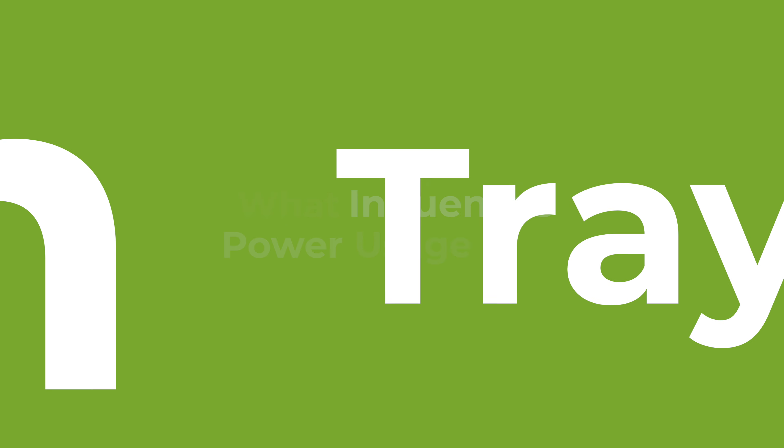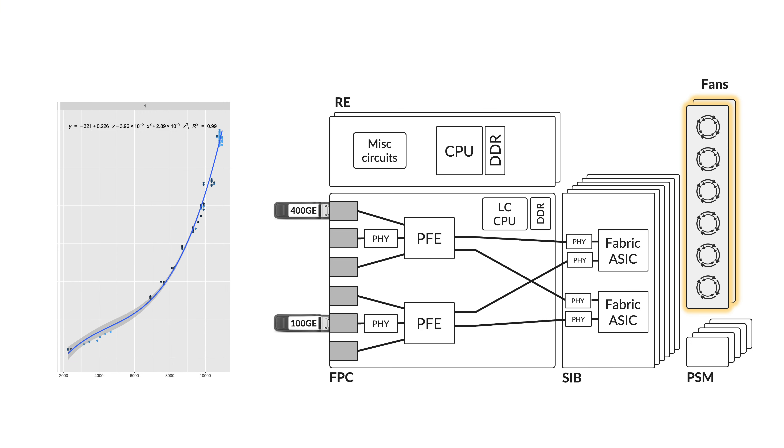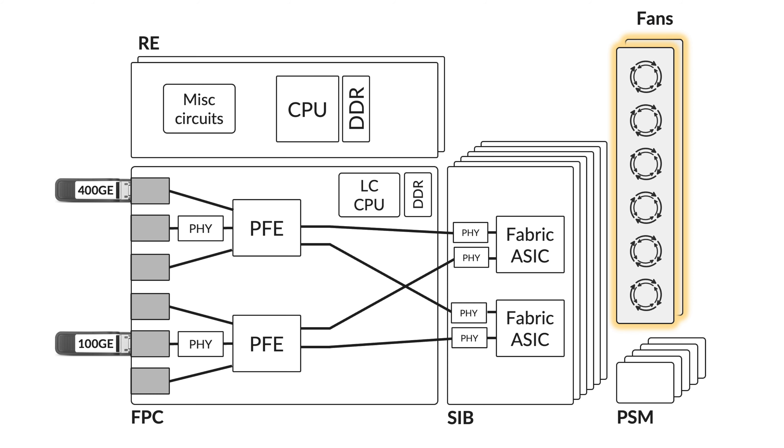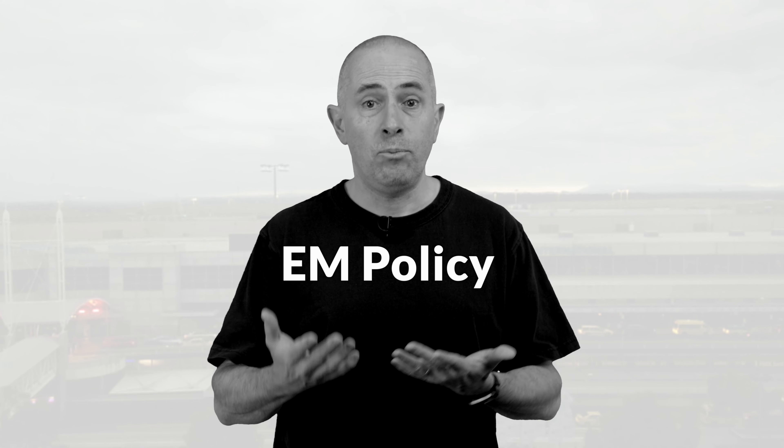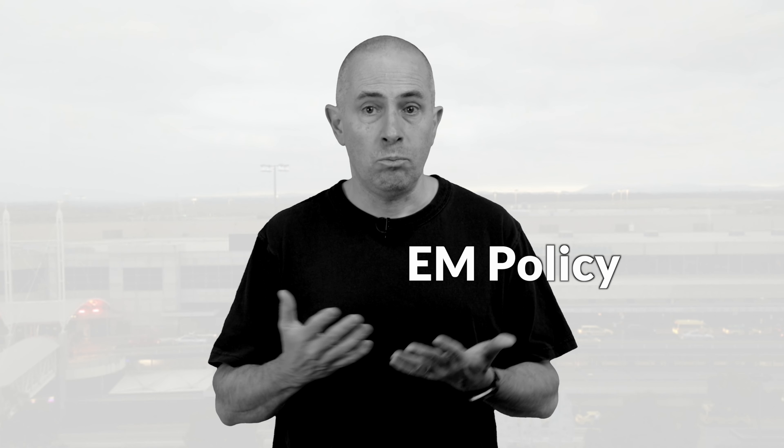Now let's look at the back of the chassis. The power consumption of a fan is a cubic function of the rotation speed, and this speed is influenced by the hottest point in the chassis. We have multiple sensors scattered all over the boards and components; the job of the fan is to make sure every part stays within operating limits. We have a mechanism called EM policy — EM for environment monitoring — that smartly adapts the speed of the fans to optimally reduce the temperature in the router.